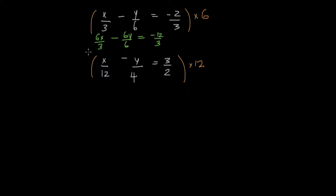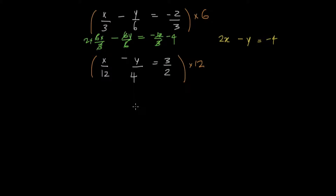And if I simplify this — 3 ones are 3, 3 twos are 6, so that just becomes 2x. And here the 6 cancels out, so I'm just left with negative y. And here 3 fours are 12, so I'm left with negative 4. If I rewrite this equation, I get 2x minus y equals negative 4. We haven't changed the equation, we've just manipulated it — from a fraction, the coefficients become whole numbers.